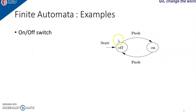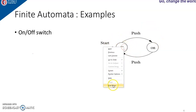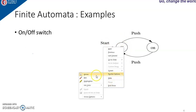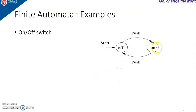This is the action which we take. When the switch is in the off state and we take the action push, the machine goes to the state on. And when we are in the on state and we take the action push, the machine goes to the off state. So these two are the states — on and off — and push is the action.